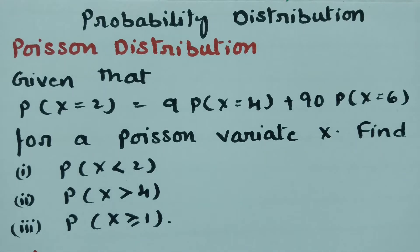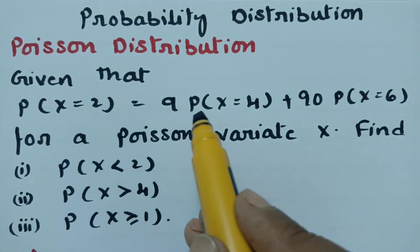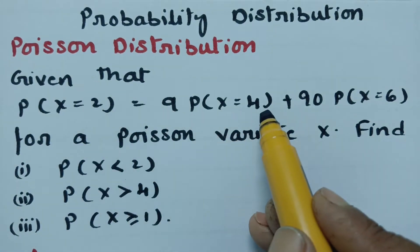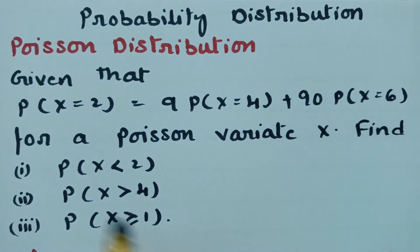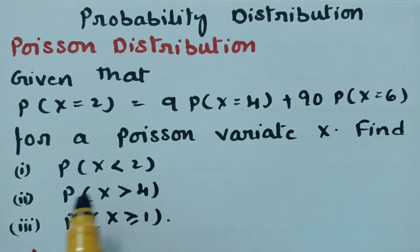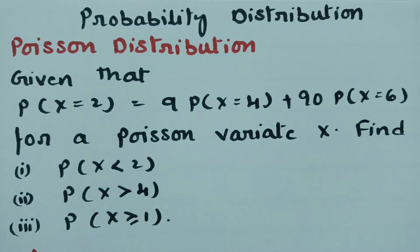This video is on Poisson distribution. We are going to solve the following problem: given that probability of x equals 2 is equal to 9 times probability of x equals 4 plus 90 times probability of x equals 6, for a Poisson variate x, we have to find: probability of x less than 2, probability of x greater than 4, and probability of x greater than or equal to 1. Let's get started.